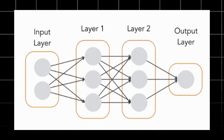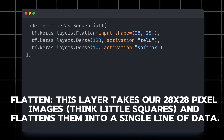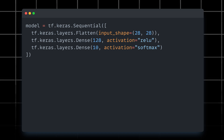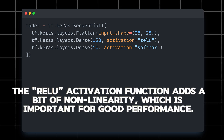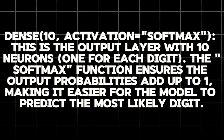Now comes the coolest part of the video — building the actual AI brain. We will use a type of neural network called a sequential model. The flatten layer takes our 28-pixel image and flattens it into a single line of data. Dense is the first hidden layer with 128 neurons; it helps the model learn complex patterns. The ReLU activation function adds non-linearity, which is important for good performance. Dense is the output layer with 10 neurons, one for each digit. The softmax function ensures the output probabilities add up to one, making it easy for the model to predict the most likely digit.